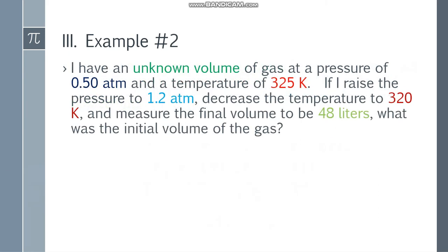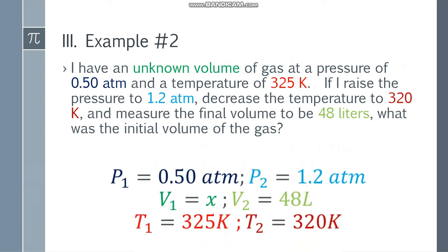Let's go to example number 2. I have an unknown volume of gas at a pressure of 0.50 atm and a temperature of 325 Kelvin. If I raise the pressure to 1.2 atm, decrease the temperature to 320 Kelvin, and measure the final volume to be 48 liters, what was the initial volume of the gas? P1 is 0.50 atm, P2 is 1.2 atm, V1 is the initial volume — that will be x — and V2 is 48 liters. T1 is 325 Kelvin and T2 is 320 Kelvin.